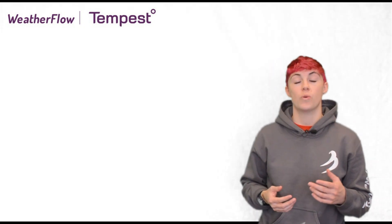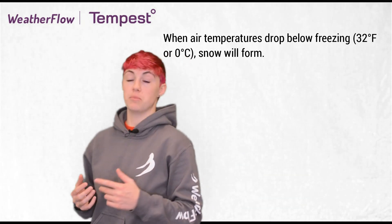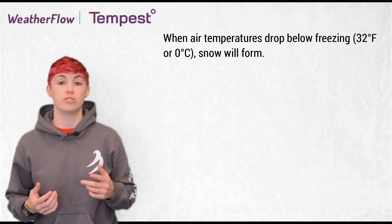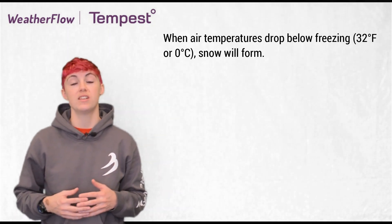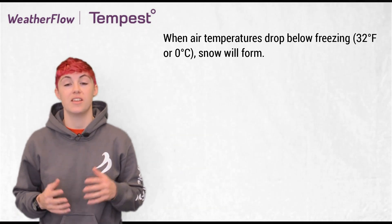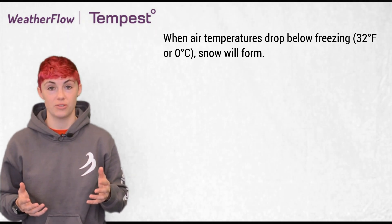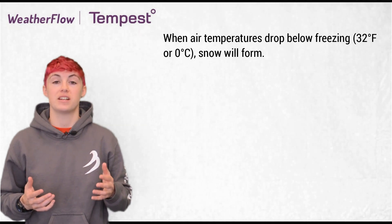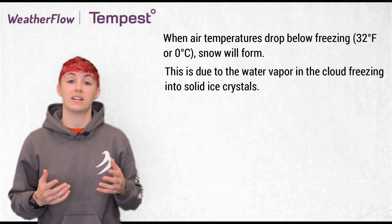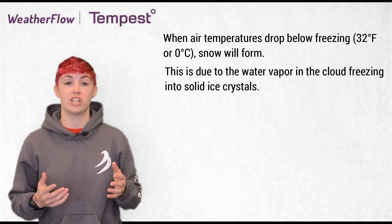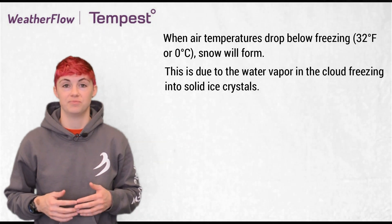When air temperatures drop below freezing — meaning below 32 degrees Fahrenheit or zero degrees Celsius — that is when we can get snow, because it's when the water molecules in a cloud can change to a solid ice crystal state.